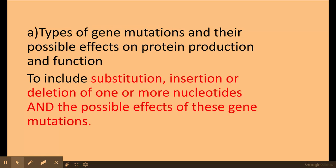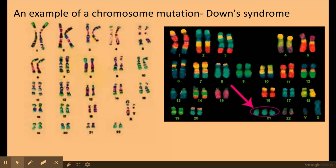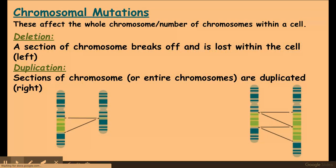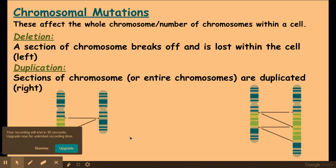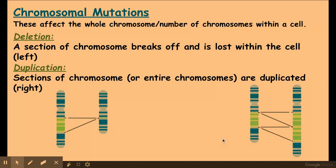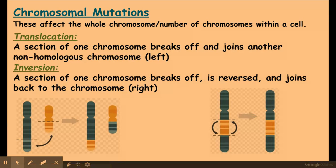We've looked at substitution, insertion, and deletion of nucleotides — now let's look at whole chromosomal mutations. An example is Down syndrome, where there is an extra copy of chromosome 21. Types of chromosomal mutations include: deletion, where a section of a chromosome breaks off and is lost; duplication, where sections or an entire chromosome are duplicated; translocation, where a section breaks off and joins a non-homologous chromosome; and inversion, where a section breaks off, is reversed, then rejoins.